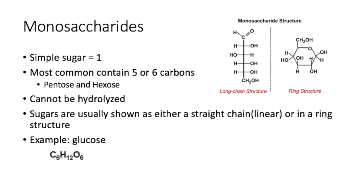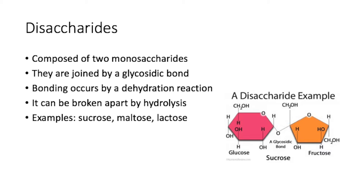As our first saccharide, we have monosaccharides, which are only composed of one simple sugar. You can find most of them in pentose or hexose form, with only five or six carbons. These cannot be hydrolyzed, and you can see them in a straight line or in a ring structure. An example is glucose as a simple sugar.